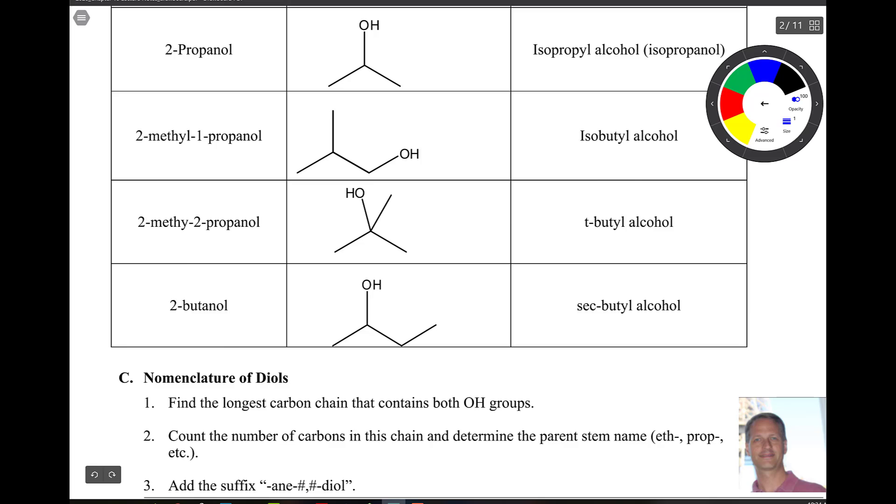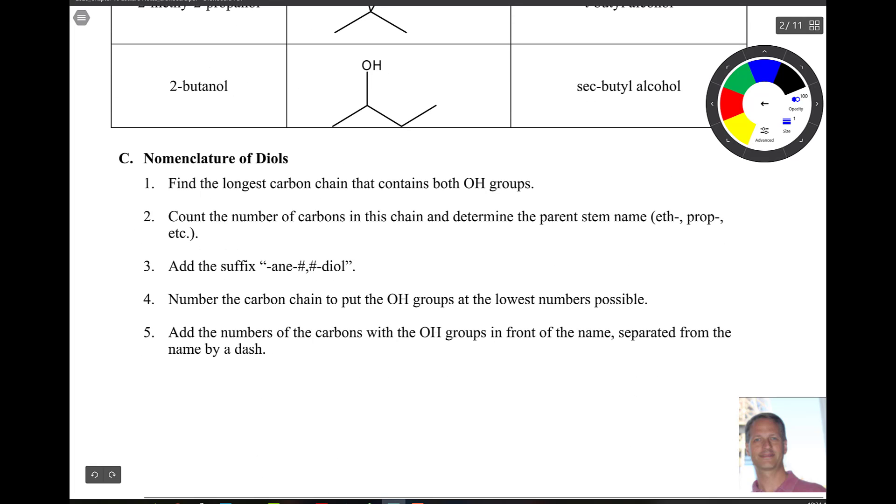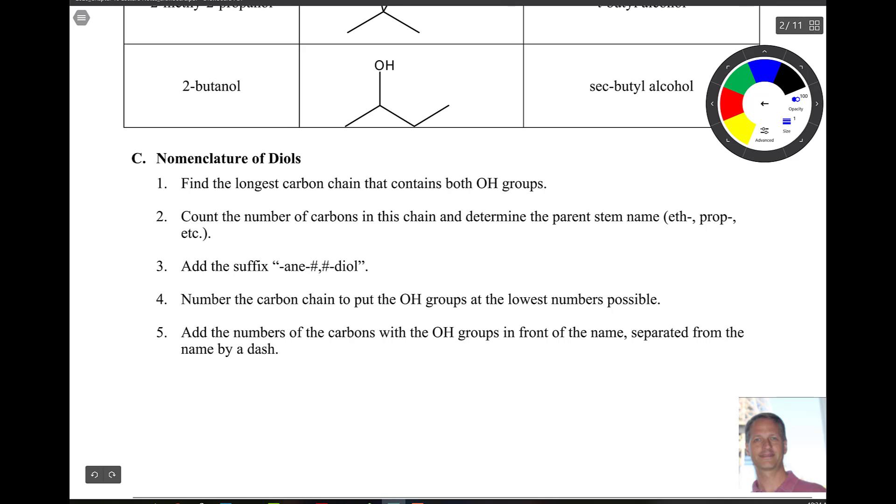All right guys, now two other things to learn how to name. One is diols and then the other is naming alcohols of benzene rings. So for diols that just means that you have two OH groups. So find the longest carbon chain, count the number, parent, and all that stuff. Add the suffix -an, this could also be -en or -yn, depending on what you're dealing with, and then a dash, and then a number for the first alcohol, and a number for the second alcohol, and then the word diol will be attached to the end. All right, let's look at an example.